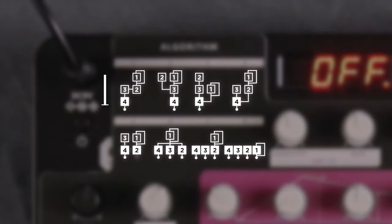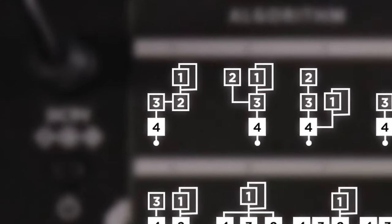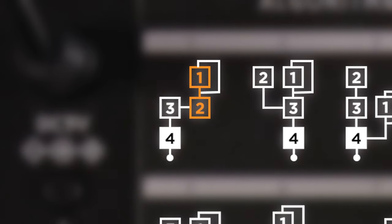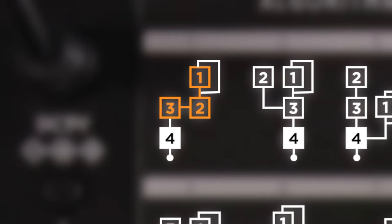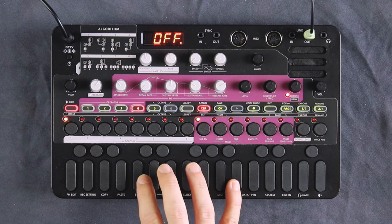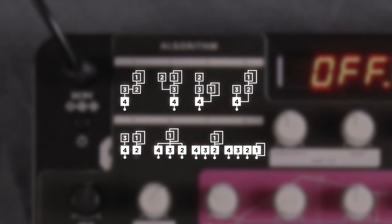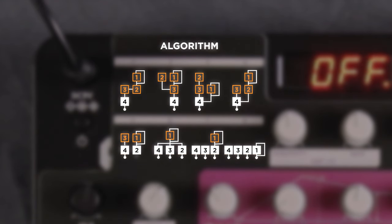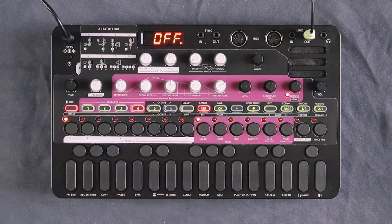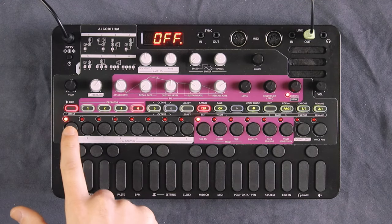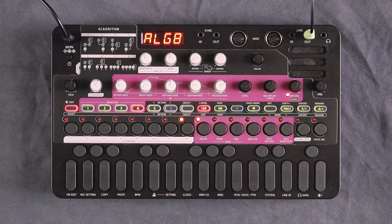On the algorithm drawings, sound flows top to bottom. On algorithm 1 for example, operator 1 modulates operator 2, that result modulates operator 3, and that modulates operator 4 — so you only hear operator 4, but modulated by everything before it. White operators in each algorithm are the ones you hear at the output; black operators are the modulators. Select the algorithm with these buttons, 1 through 8.